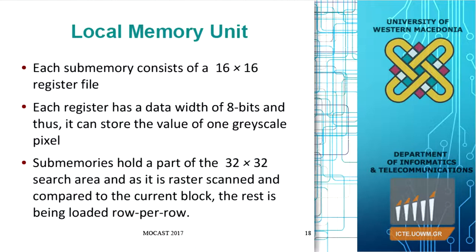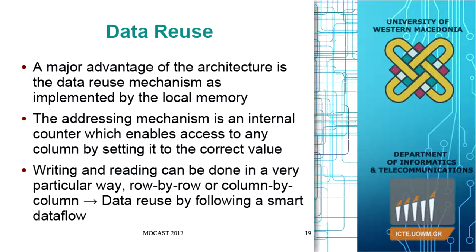We designed a register file of 16 by 16, where each register has a data width of 8 bits — one pixel. We are using grayscale pixels with values from 0 to 255, and the sub-memories hold pixels of 32 by 32. In our architecture, we reuse data as many times as possible in order to eliminate costly transfers from the external off-chip memory to the internal FPGA memory. We reuse data row by row and column by column as described in the paper.